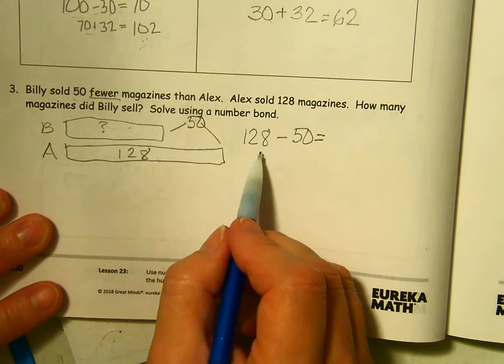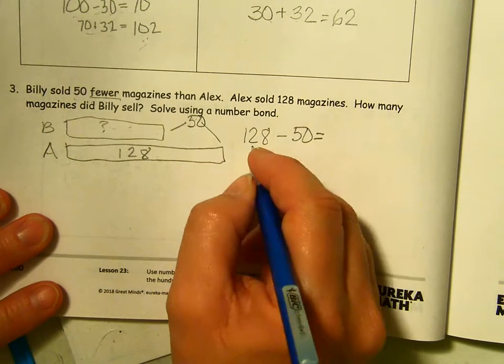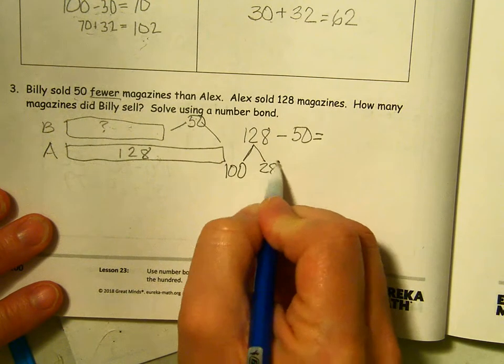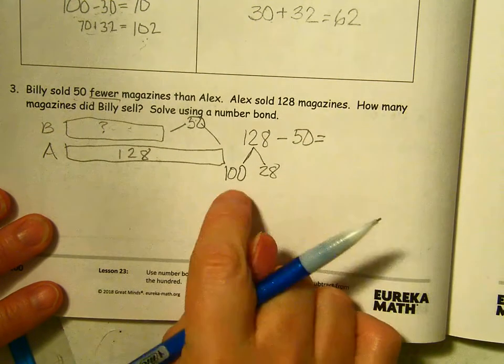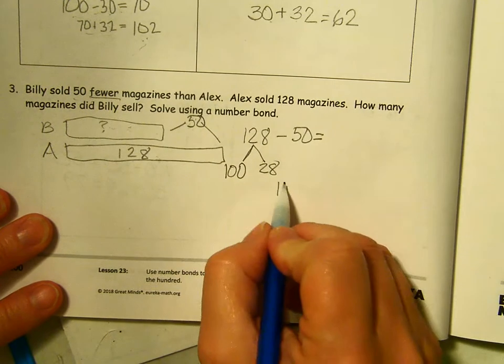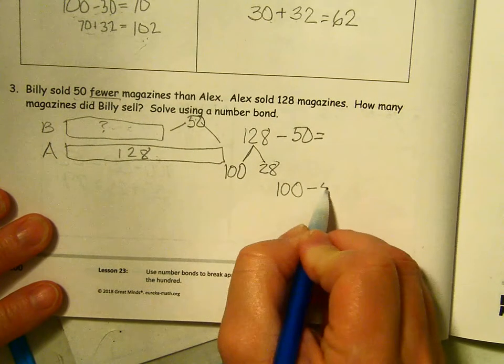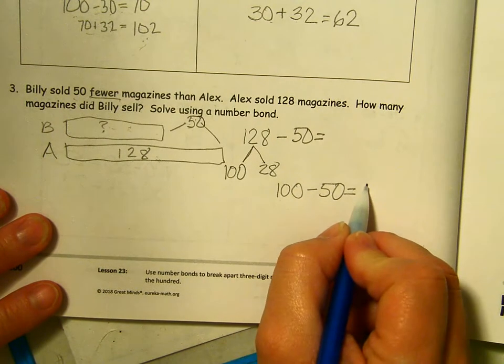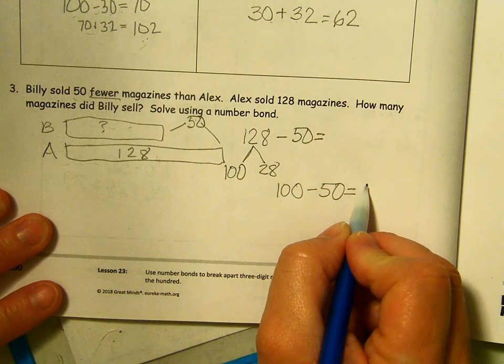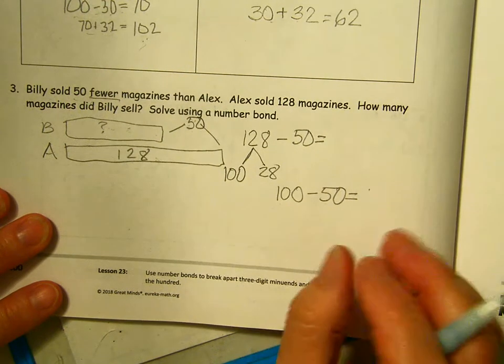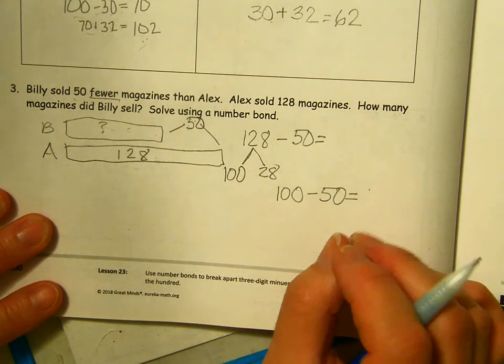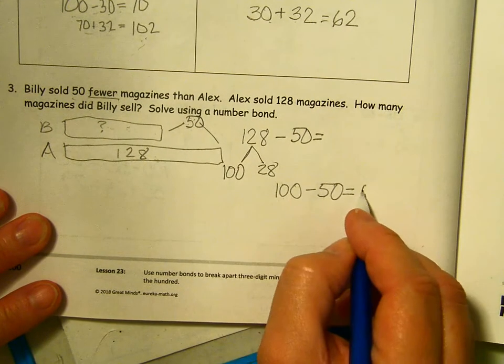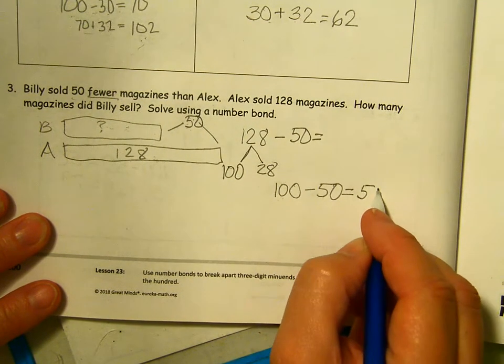128 is not friendly, but 50 is. So let's get this to be 100 and the other part is 28. Break it up. Subtract 100 minus 50. 10 tens minus 5 tens is, all comes back to those number bonds for 10. The friendly numbers, the pairs that make 10. So important to learn. So 10 minus 5 is 5 tens or 50.